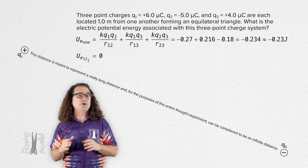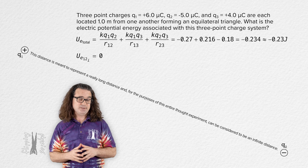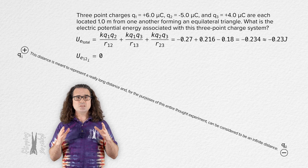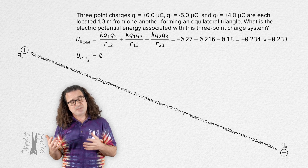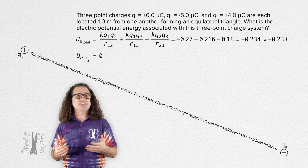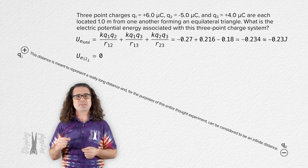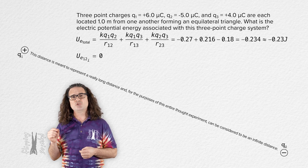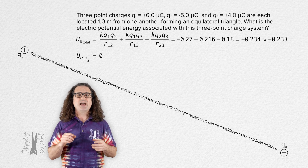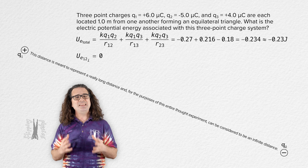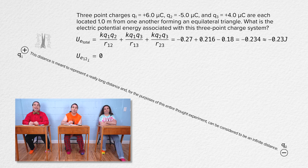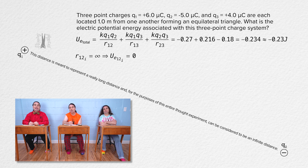That is also how electric potential energy is defined. As a scientific community, we have decided to identify the location where the electric potential energy for a two-point charge system equals zero as when the two point charges are infinitely far from one another. You can see this mathematically because the initial distance r12 equals infinity and anything divided by infinity equals zero.